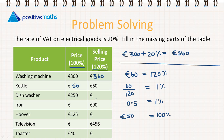Pause the video and see if you can find the selling price for the dishwasher, the Hoover, and the toaster — you're given 100% and need to find 120%. Then find the price before VAT for the iron and the television — you're given 120% and need to find 100%.